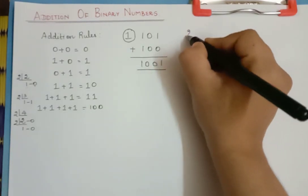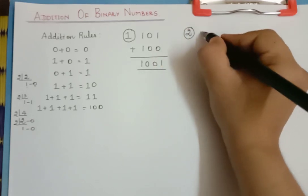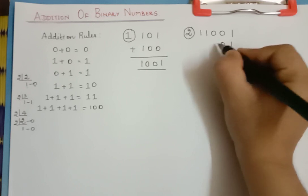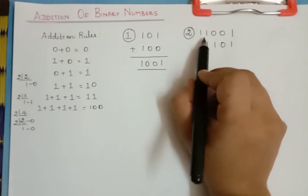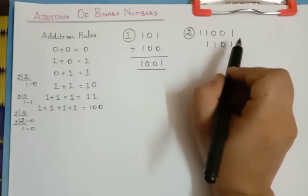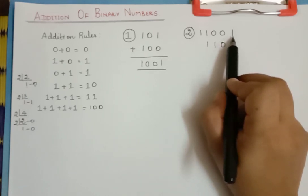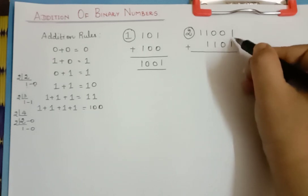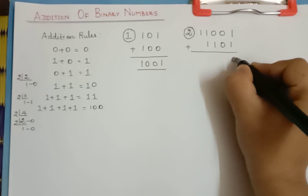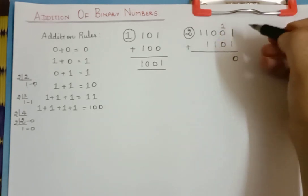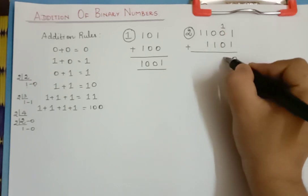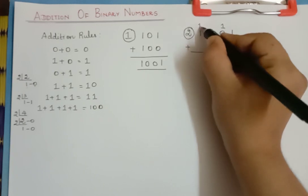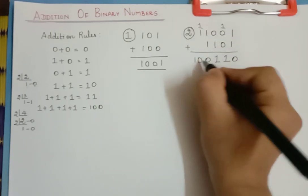Now let us do addition for some more binary numbers. Let us consider the binary number 11001 and another binary number 1011. Very carefully we have to write the numbers — there are 5 digits and here 4 digits, so as usual we write from right to left. Now: 1 plus 1 is 0 with a carry over of 1. Then 1 plus 0 plus 0 is 1 only. And 0 plus 1 is 1. Then 1 plus 1 is 0 with a carry over of 1. And 1 plus 1 gives 10. So this is the answer.